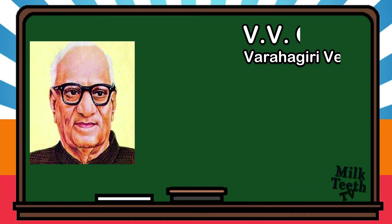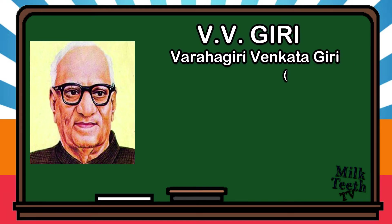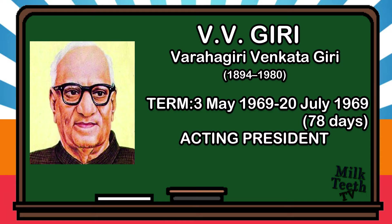V.V. Giri — First Acting President of India. Born in 1894, he became the acting president on 3rd May 1969 and served till 20th July 1969, for a period of 78 days.